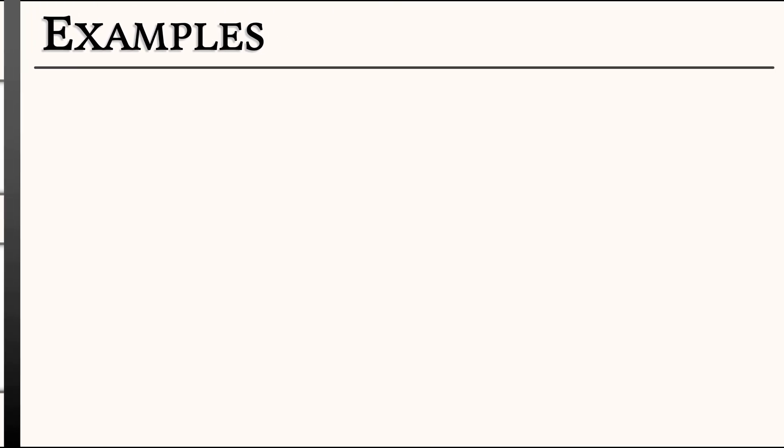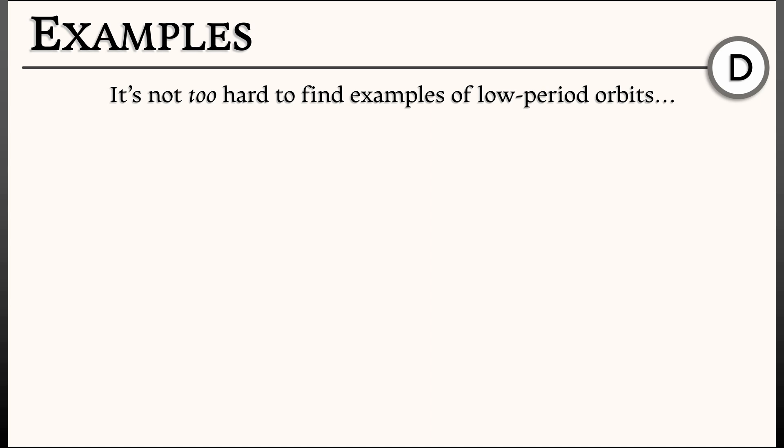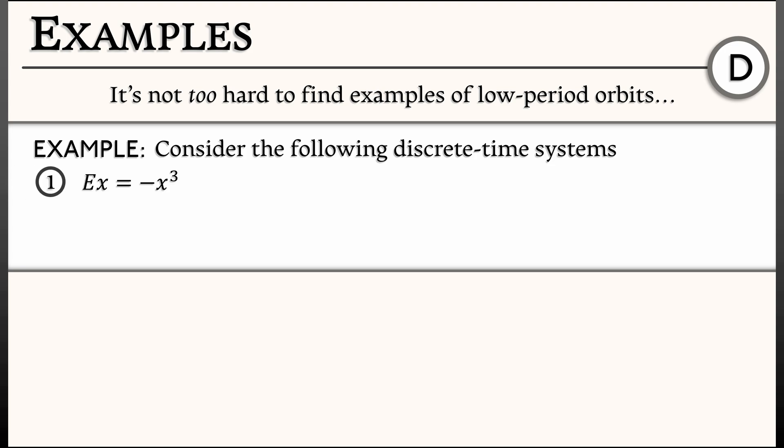It's not too hard to find some examples of simple periodic orbits in discrete time dynamical systems. Let's consider the following systems. First, let's look at x' = -x³. This has a very obvious periodic orbit of period 2, where the orbit alternates between +1 and -1: plus 1, minus 1, plus 1, minus 1. You can see by plugging +1 into the right-hand side and getting -1, then plugging -1 in and getting +1, that this is indeed a periodic orbit of period 2.